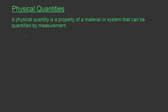A physical quantity is a property of a material or system that can be quantified by measurement. For example, the height of a person. Height is a property of that person which is a measurable quantity. So height is a physical quantity that can be quantified by measurement.